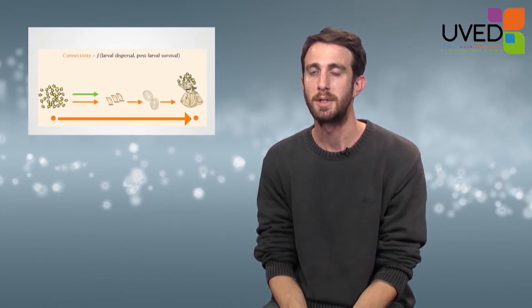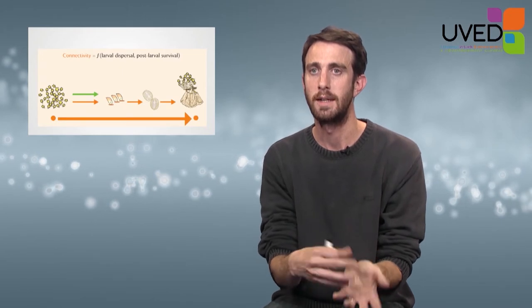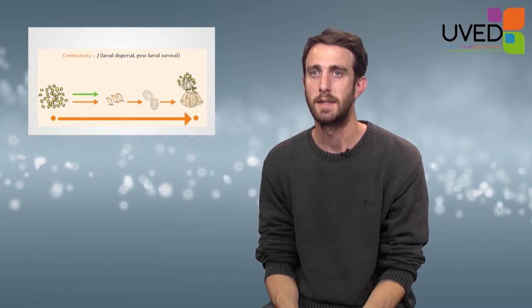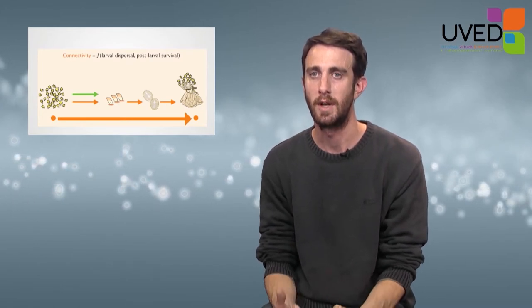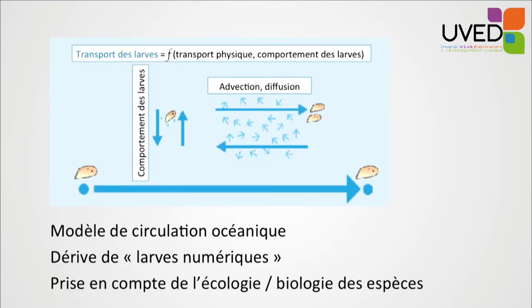As a researcher, how do we study connectivity? Connectivity involves larval dispersal — the phase during which larvae drift in the ocean currents — but also post-larval survival when larvae become juveniles, transportation, and the capacity to find a favorable habitat to settle down. This is divided into two phases: larval dispersal based on physical transport, and the behavior of larvae in the water column.